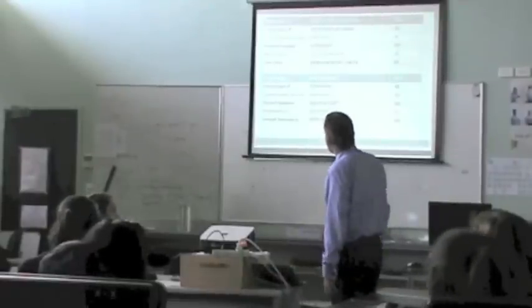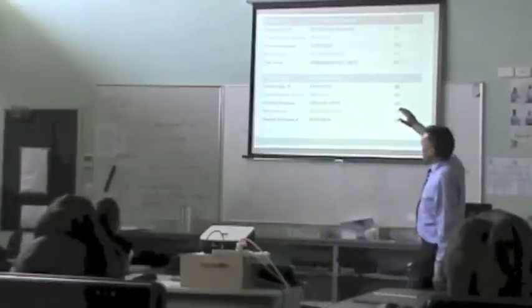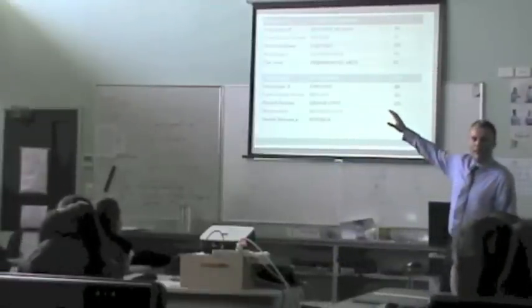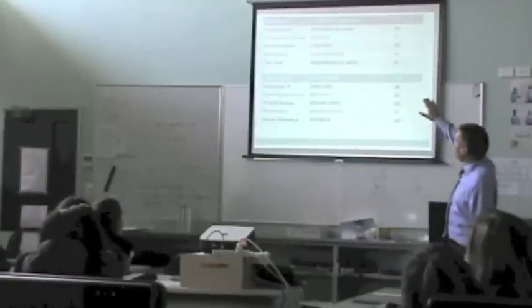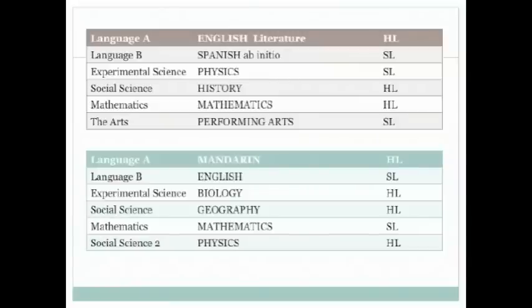Here's some examples. We have two students here. The first student likes English, they're an English speaker. They've decided to do Spanish Ab Initio this year. They're going to do physics, history, maths, and performing arts. They're doing three at higher level, which is the English literature, history, and mathematics. They're doing the others at standard level. That's a kind of course that might appear for a student.